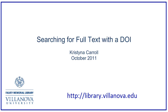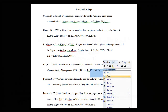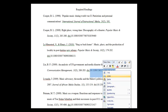Hello and welcome to this video tutorial for using the DOI, or Digital Object Identifier, to find the full text of an article through Falvey Libraries' online catalog. In this example, I want to find the full text of an article that I am required to read for my class. I have the article citation, including a DOI.